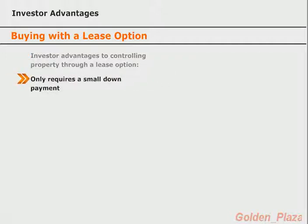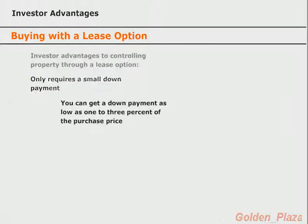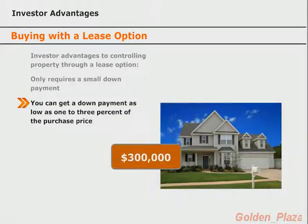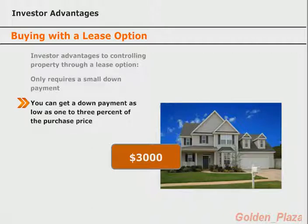We mean small — in fact, many times you can get a seller to lease option you a home for as little as one to three percent down. That means if you wanted to buy a $300,000 home, you could get into it for as little as $3,000. As an investor, the less money it takes to control a property, the better. So only needing a little money to start with is one advantage of obtaining property through lease options.